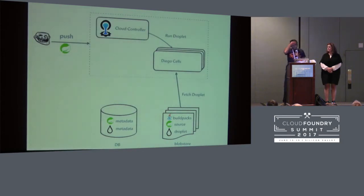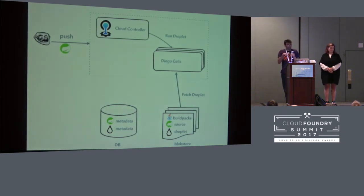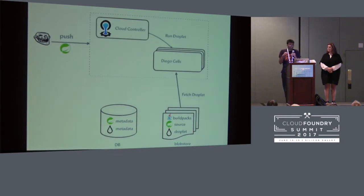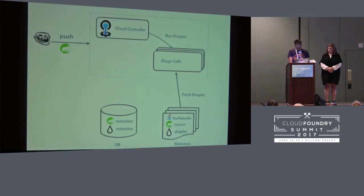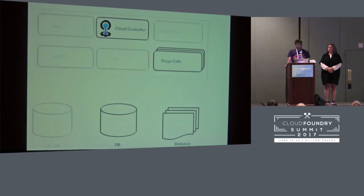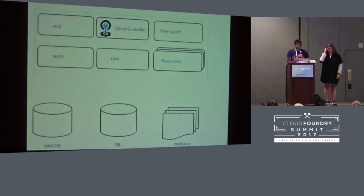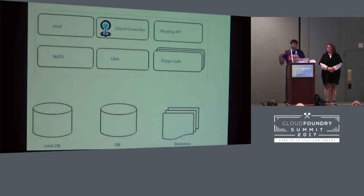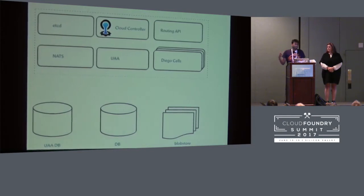So what we can see here is there is some referential integrity between the blob store and the database — references going out from the database to the blobs. If we do a restore and these records don't line up, your apps might not come back. These are not the only two components in Cloud Foundry; there are other components with their own data sources, and these data sources might have similar referential integrity concerns across data sources.